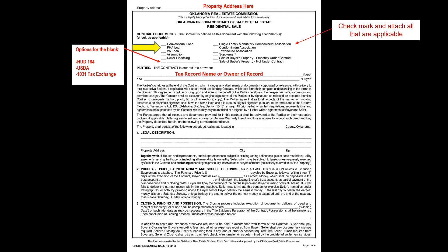Do not leave the seller's name blank. Go to the tax records to find the owner of record. If you're unsure, you can write the name found followed by 'or owner of record.' For the buyer's name, always ask their legal name and spelling — they may need a middle initial, or a suffix like Junior, Senior, or III.